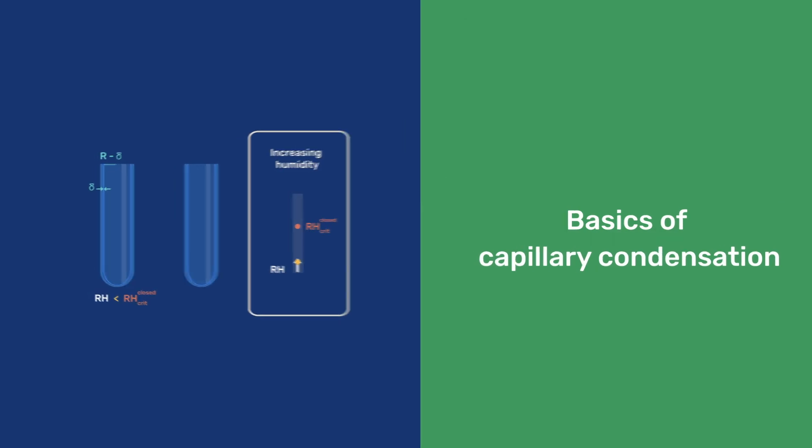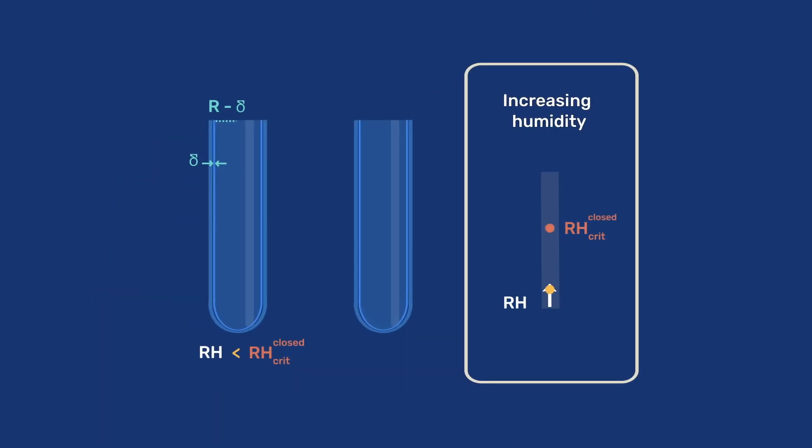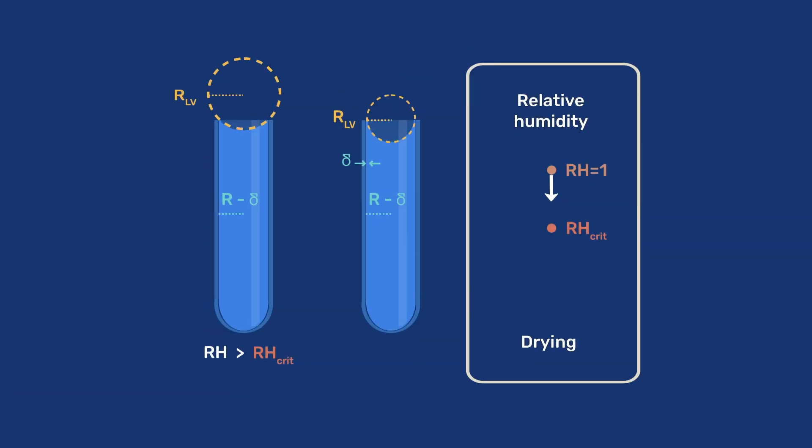In a previous video, we saw that the pores of hydrophilic materials may undergo capillary condensation, even at relative humidity below 100%, and develop a meniscus. In this video, we examine the reverse process of drying. We will see how the curvature of those menisci are at the origin of drying shrinkage, a process that is damaging to many materials.